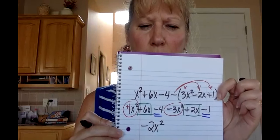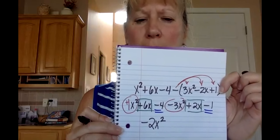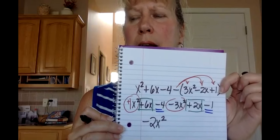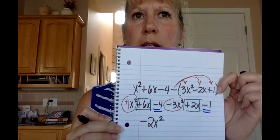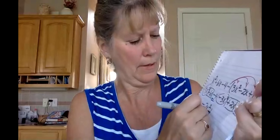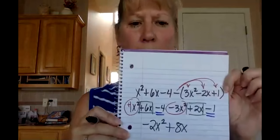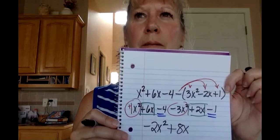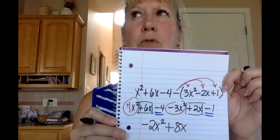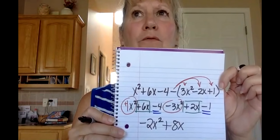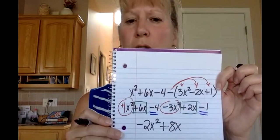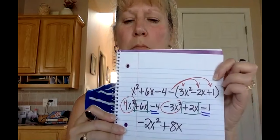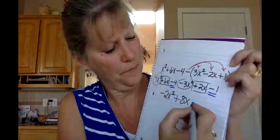Combining the x squared terms in the circles: plus 1x squared minus 3x squared = negative 2x squared. In the green squares, plus 6x and plus 2x: 6 plus 2 = plus 8x. For the underlined constants: minus 4 minus 1. If you're at negative 4 and subtract 1, it gets farther from zero — negative 4 minus 1 = negative 5. So the final answer is negative 2x squared plus 8x minus 5.